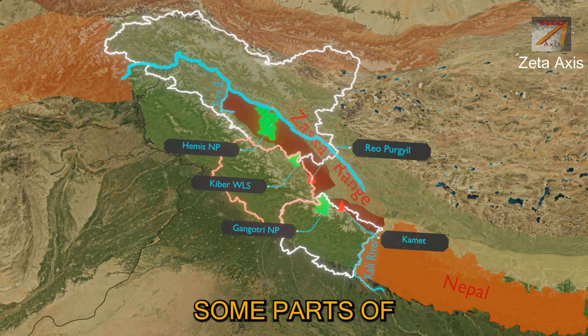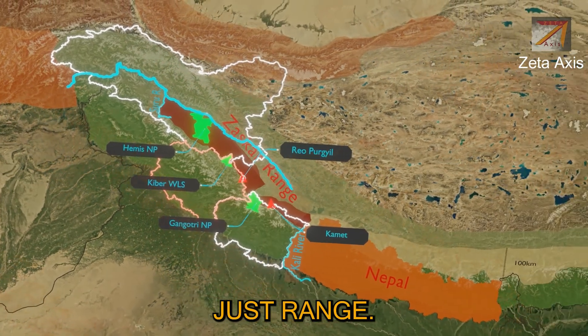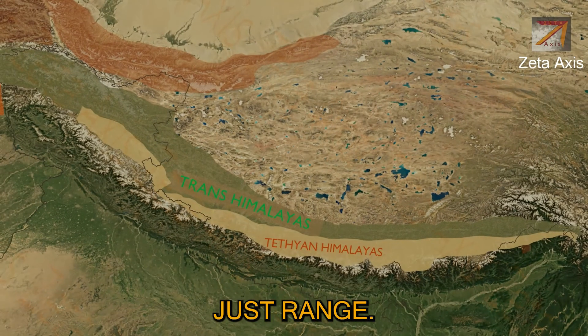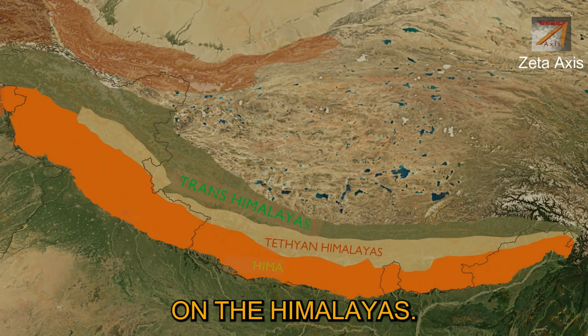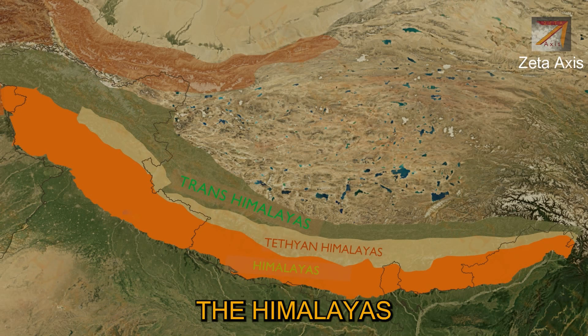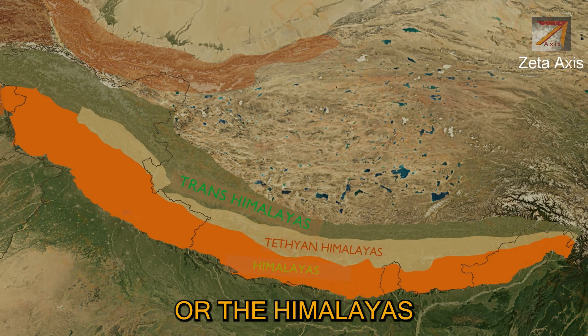Hemis National Park is located in the Zanskar range, between the Indus and Zanskar rivers. Kibber Wildlife Sanctuary and Gangotri National Park also cover some parts of the Zanskar range.